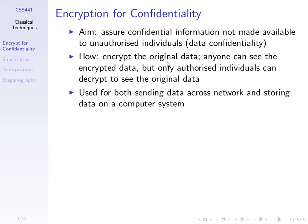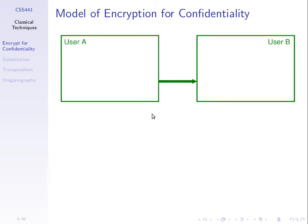We encrypt the original data, and we assume anyone can see that encrypted form of the message. But the algorithm we use to encrypt should be such that only authorized people can decrypt and see the original data. We need to discuss what algorithm can be used and how we indicate who the authorized individual is. This applies both to sending data across a network and to storing data on a computer system.